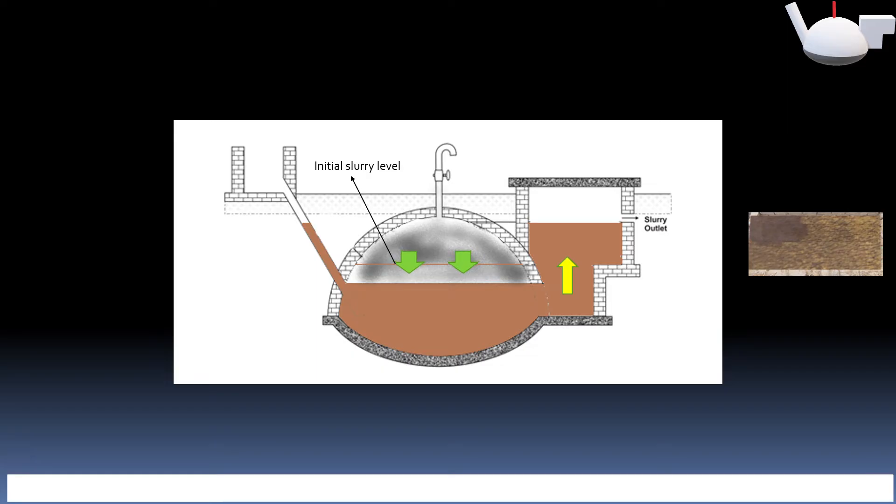Similarly, there is rise in the outlet tank which is shown here. Consider the stage when the slurry level in the outlet tank is at outlet point.